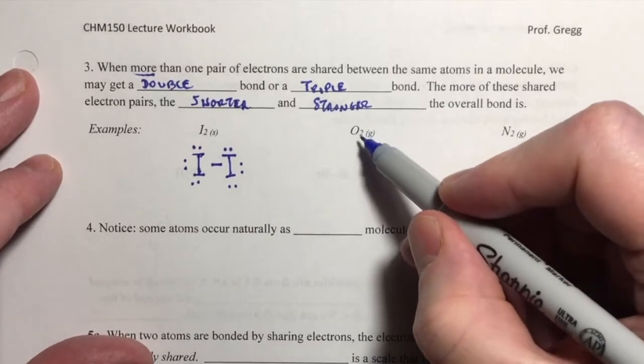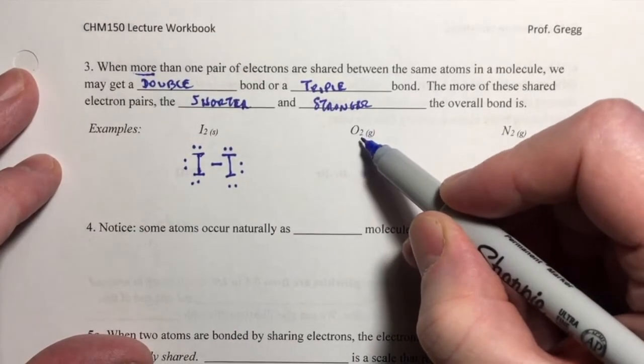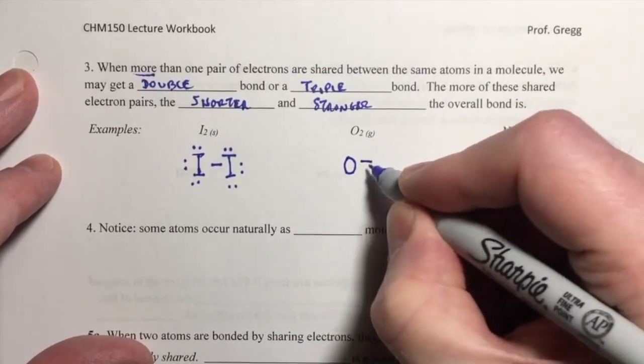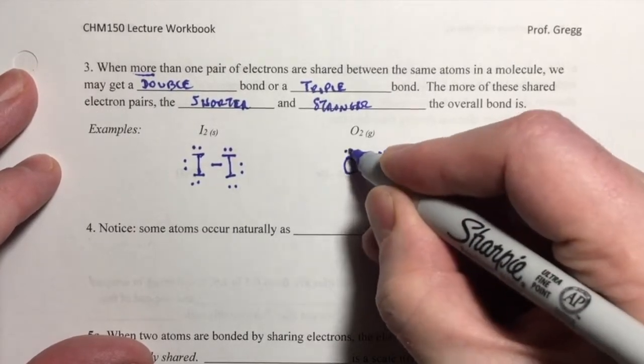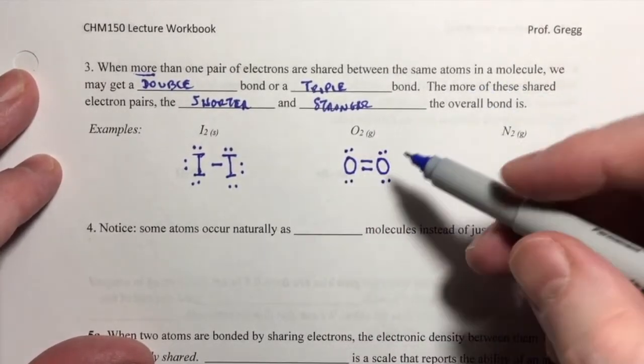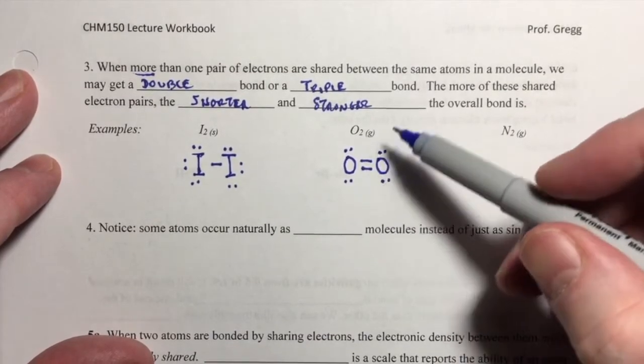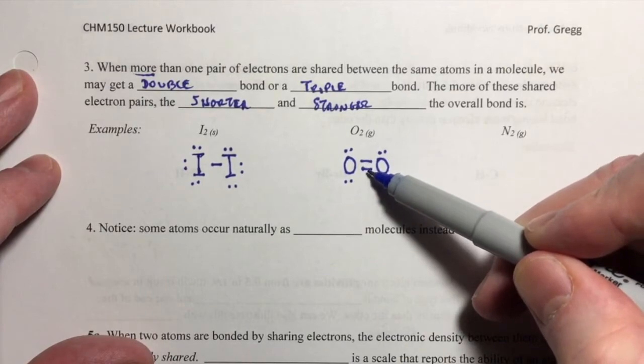If we go to O2 oxygen gas, the neutral diatomic element oxygen, then there's the Lewis structure for the O2 molecule. It has a double bond, so that means it has a pair of electrons here and another pair of electrons here.